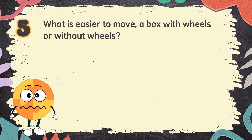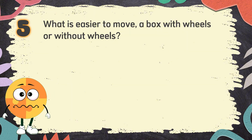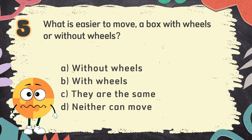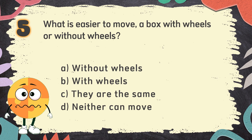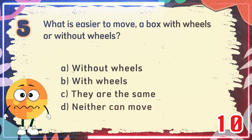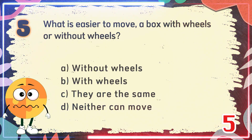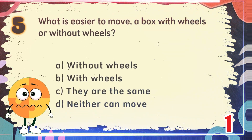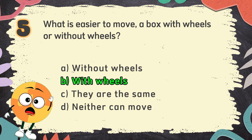Number 5. What is easier to move — a box with wheels or without wheels? The choices are: A. Without wheels. B. With wheels. C. They are the same. D. Neither can move. The correct answer is B. With wheels.